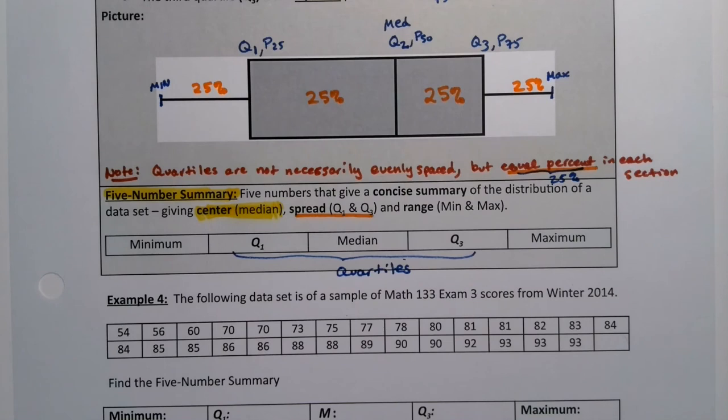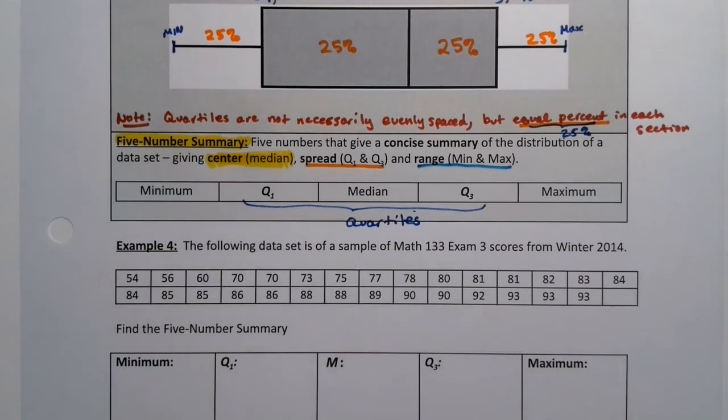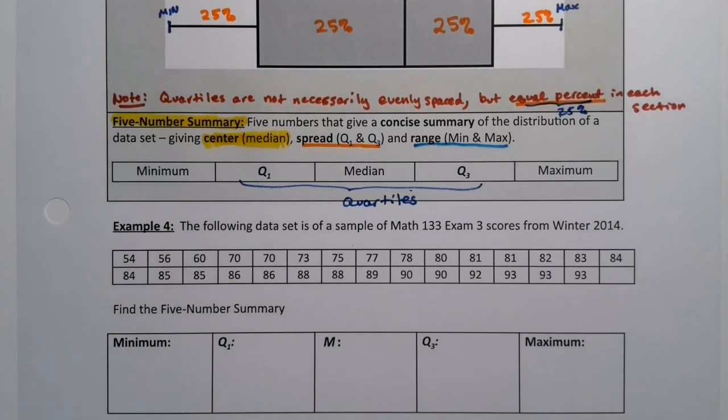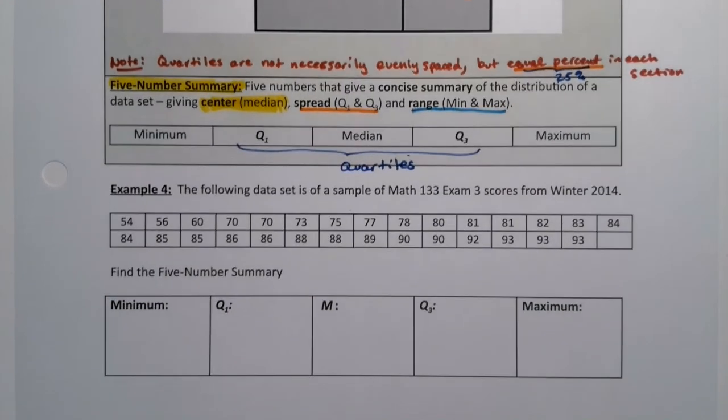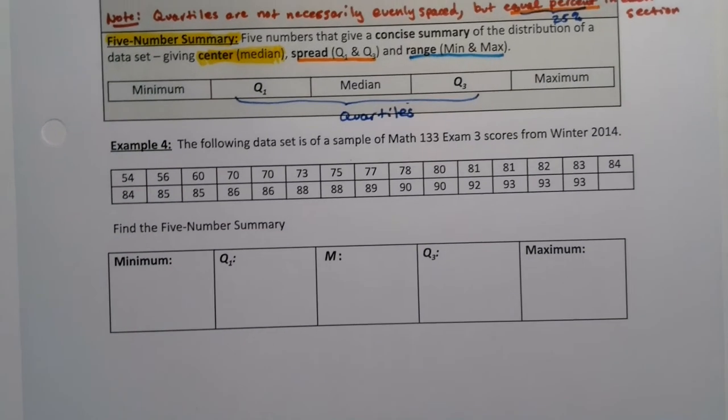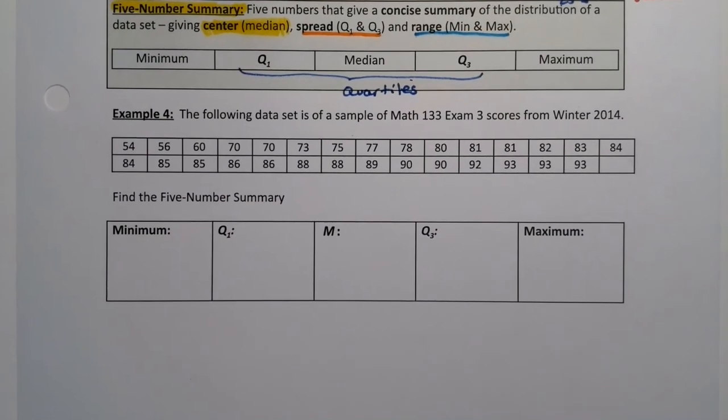And it tells you another measure of spread. It tells you the range, which is the distance from min to max. So it's a really nice way to give a data set, a numerical summary of a data set, which is what we're supposed to be looking for in chapter three. Speaking of which, let's calculate the five number summary here.